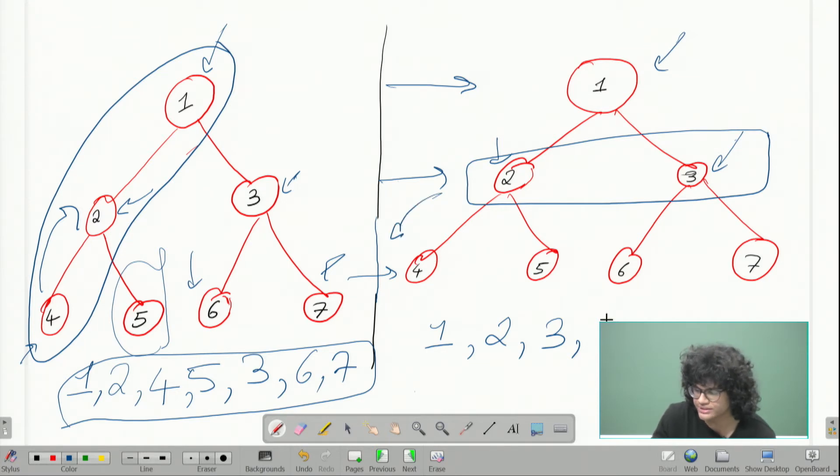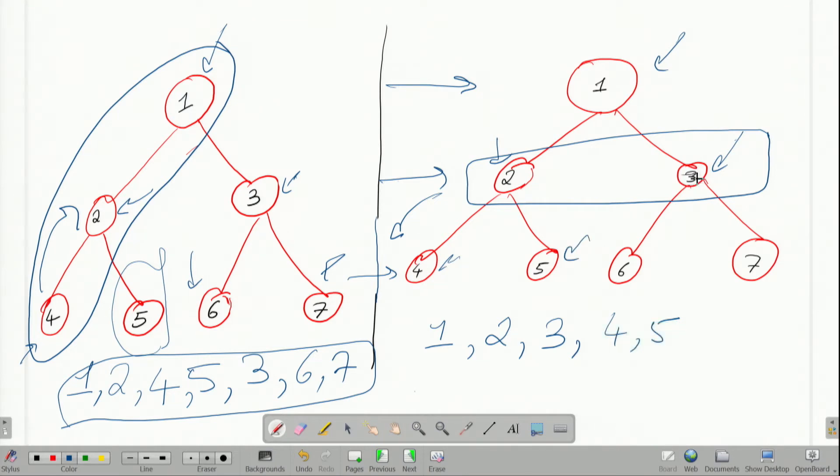Now we move on to the next one. So two children are four comma five. And then so this is done, this is done. We come to the sibling three, three children are six and seven. So this is the BFS order.